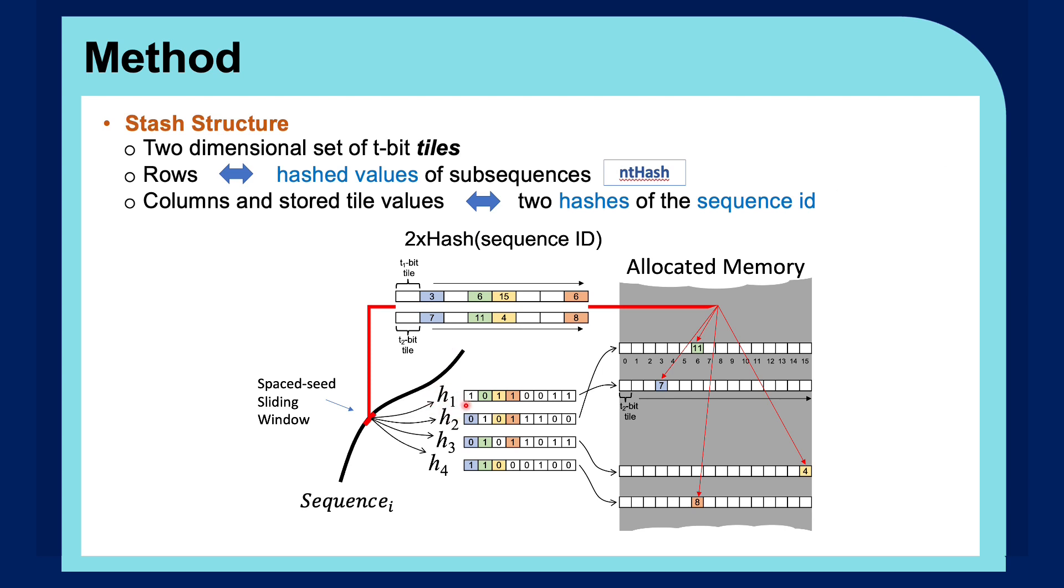So here, for the first hash function output, the first bits of the other three hash function outputs are concatenated, which results in 001, so we will address index 1 in the sequence ID hashes, which leads to filling column 3 with the value 7.